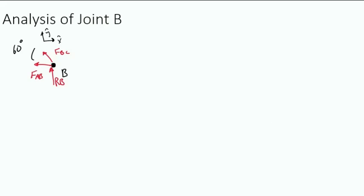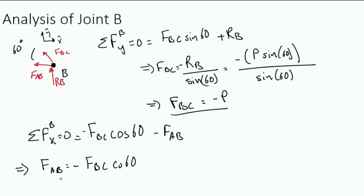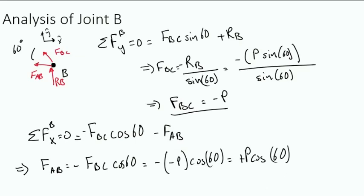Now that we have solved for all the unknowns in joint A, we will move along to joint B. Moving on to joint B, we have already solved for the force in member AB, or F_AB. The last unknown to solve for is the force in member BC, or F_BC. We can do this by taking the sum of the forces in the Y direction. Taking the sum of the forces at joint B and setting them equal to zero, we find that F_BC is equal to minus P. Since F_AB is already known, we can check our analysis by taking the sum of the forces in the X direction. We find that F_AB is equal to minus F_BC cosine 60. Plugging in for F_BC, we find that F_AB is equal to P cosine 60, which is the same as what we had previously solved for.